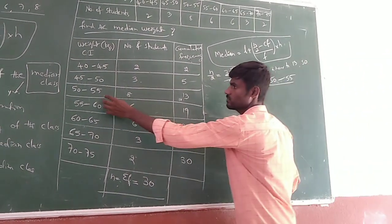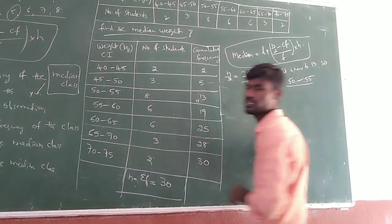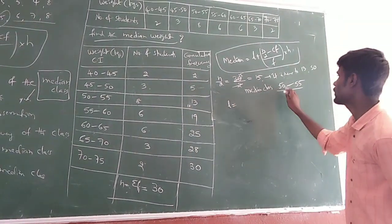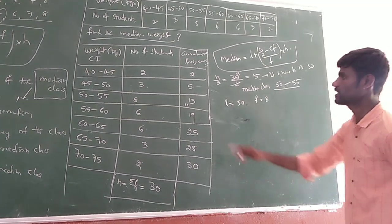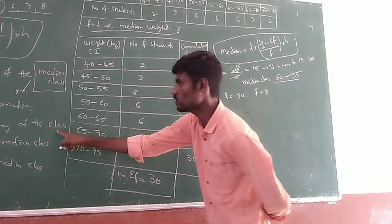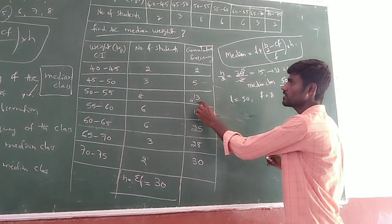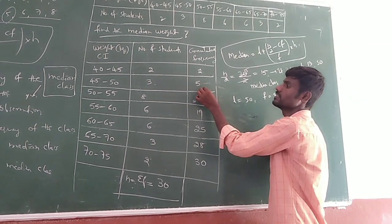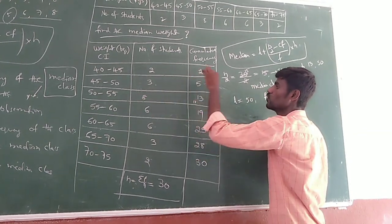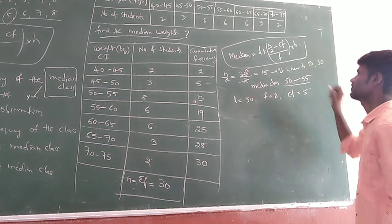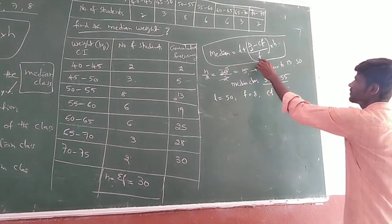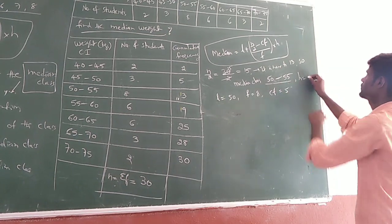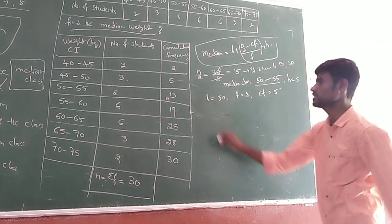If we get the median class 50–55, we immediately get F — the frequency of the median class, which is 8. The lower boundary L is 50. The cumulative frequency Cf is the preceding cumulative frequency, meaning the value above the median class row, which is 5. And H, the class size, is 5. Now we substitute these values into the median formula.